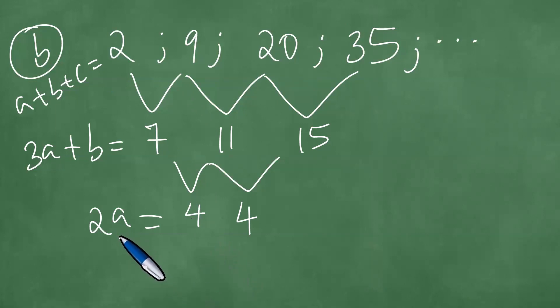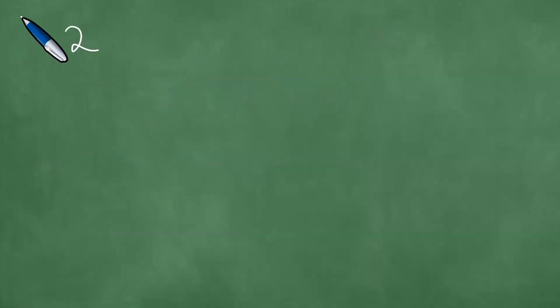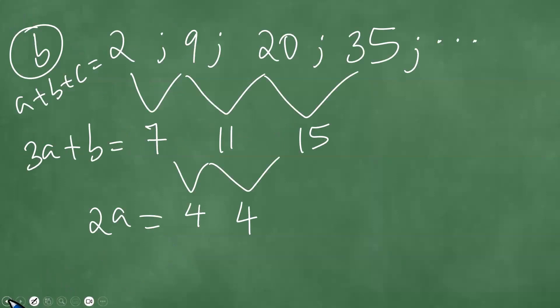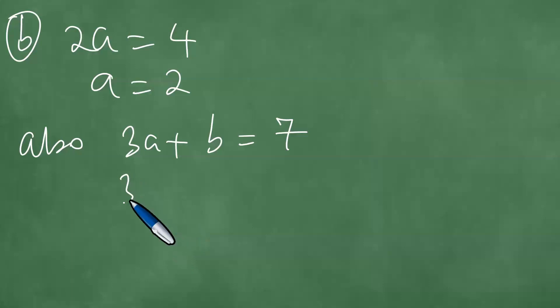And if this is the case, we then say 2a equals 4, that is part b. Dividing by 2 means a equals 2. Also, we have 3a plus b equals 7, so that we have 3 into 2 plus b equals 7, which means 6 plus b equals 7, which means b equals 7 minus 6, which is 1.